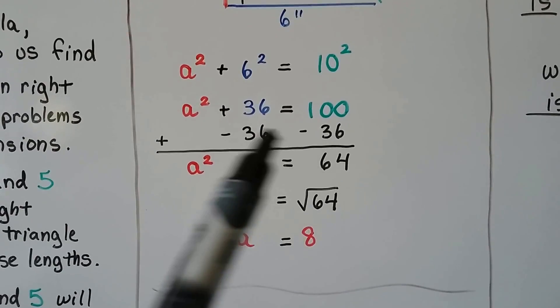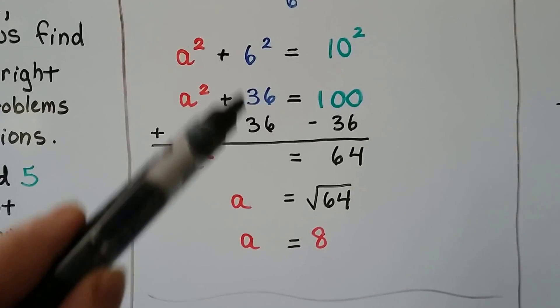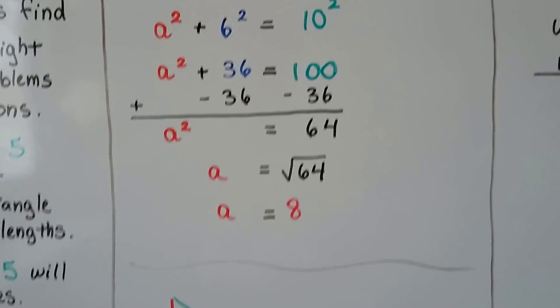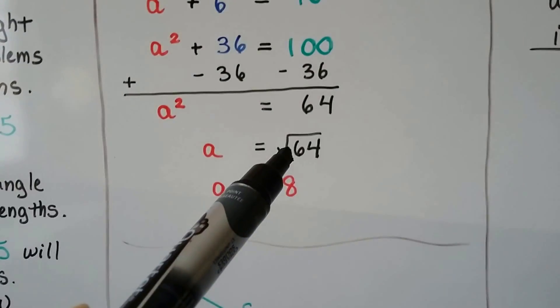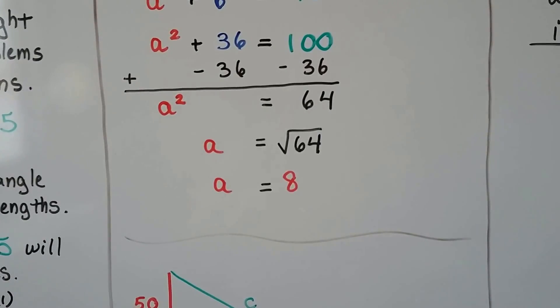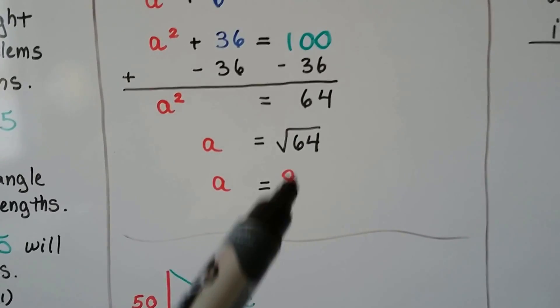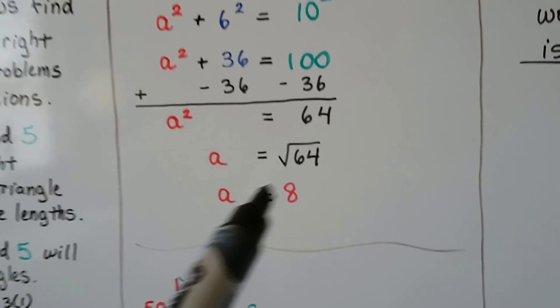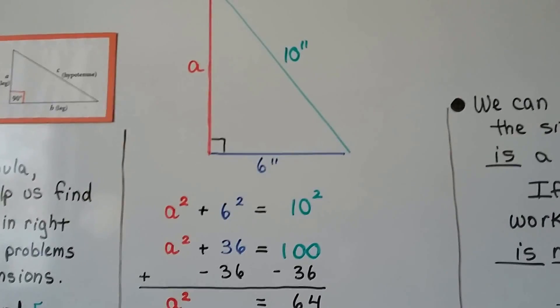We add a negative 36 to both sides of the equation. Here comes our algebra. We create a zero pair, and we get a squared equals 64. We can remove this little two exponent by putting a radical sign around that 64 and finding its square root. What number can be multiplied to itself to make a 64? An 8. So, we know the side length for A is 8. And since this is in inches, we know it's 8 inches.